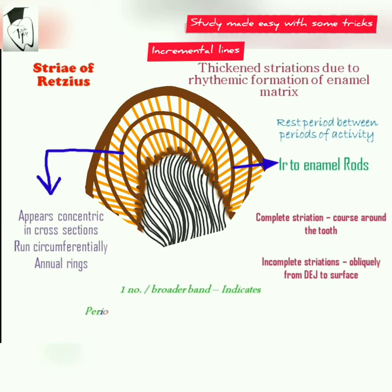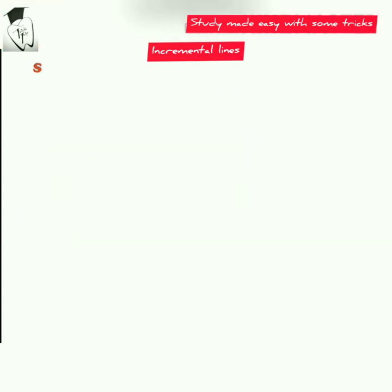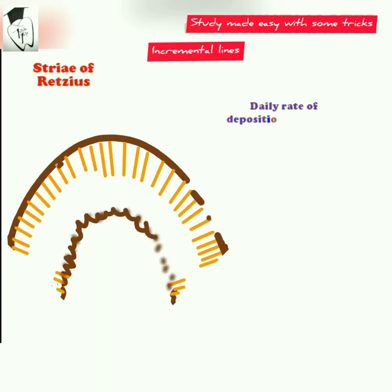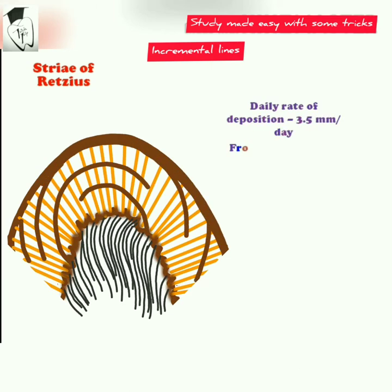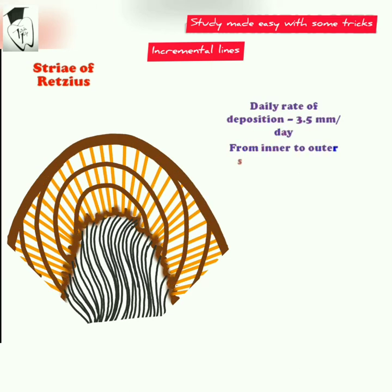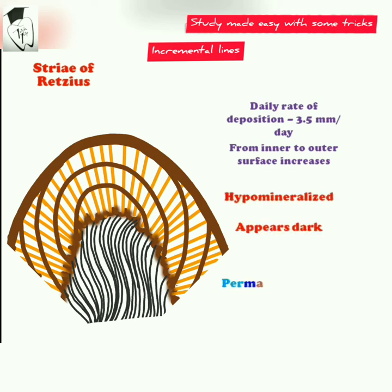A greater number or broader band indicates a period of metabolic disturbances in amelogenesis, resulting in a prolonged rest period. The daily rate of deposition is 3 to 5 micrometers per day, increasing from the inner to outer surface. These incremental lines appear dark, meaning they are hypomineralized, and are more frequently seen in permanent teeth than in prenatal enamel.